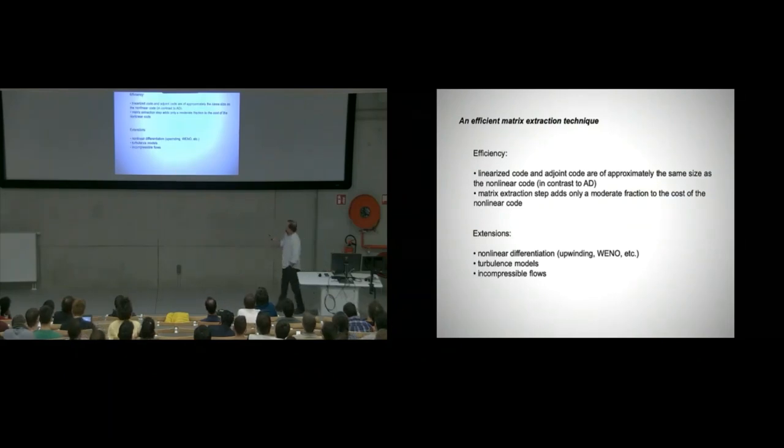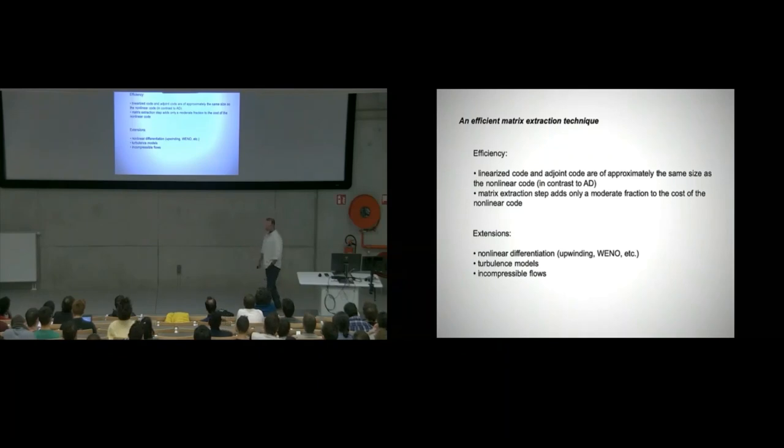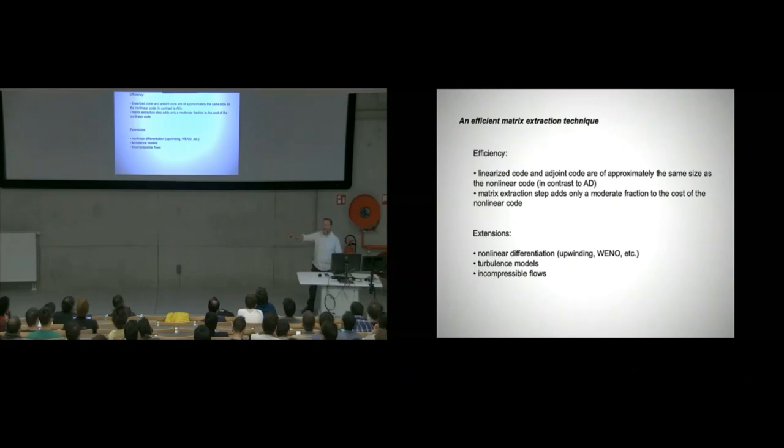The efficiency, the linearized code and the adjoint code are approximately the same size. There is none of this explosion that you get with automatic differentiation. The matrix extraction step adds only a moderate fraction. It's so cheap. You can generate it whenever you need it. And it works really well. And your adjoint is up to machine precision. You don't bother with boundary conditions, which usually are the killer in deriving this one. Everything is lumped together.